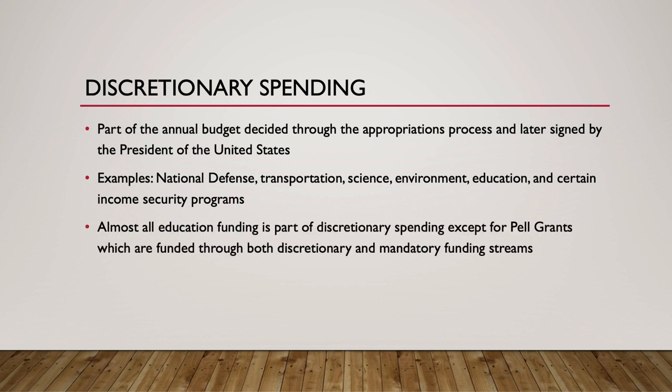Almost all federal spending that affects colleges, universities, and college students is discretionary. However, Pell Grants combines mandatory and discretionary funding streams.